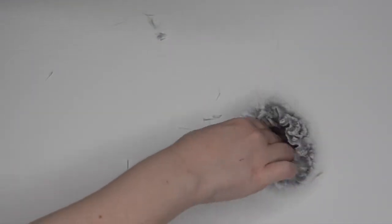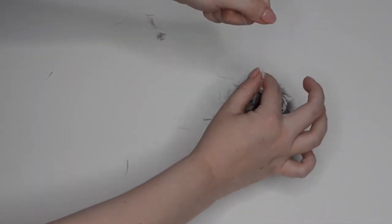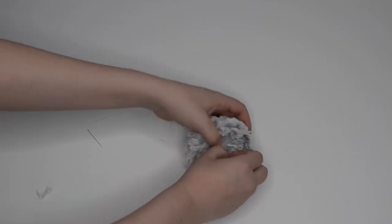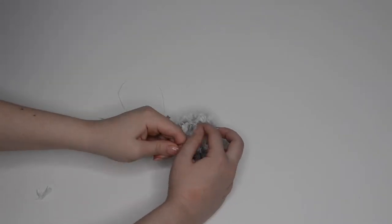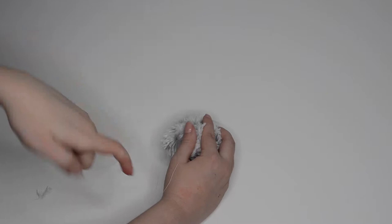When I pulled the thread tight it gathered the fabric into a small little ball. I stuffed it with polyfill and then tied a few knots in the thread to finish closing it up. If you want, before you close it up you can also add some catnip to the inside.